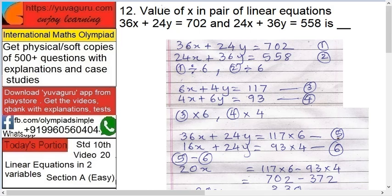Let's start. Value of x in the pair of linear equations: 36x plus 24y equals 702 and 24x plus 36y equals 558. Basically, you have to find the value of x and y, though it only asks for x. You can find y also.